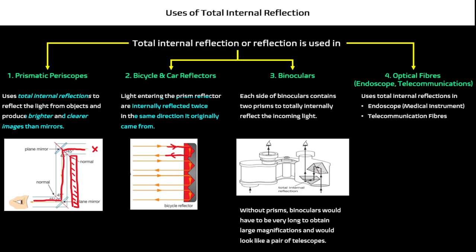For binoculars, we apply two prisms. Each side of the binocular contains two prisms and performs internal reflection. Without these prisms, our binoculars would be extremely long — like telescopes for watching stars. Because we can use two prisms to internally reflect the light, binoculars can be made compact.